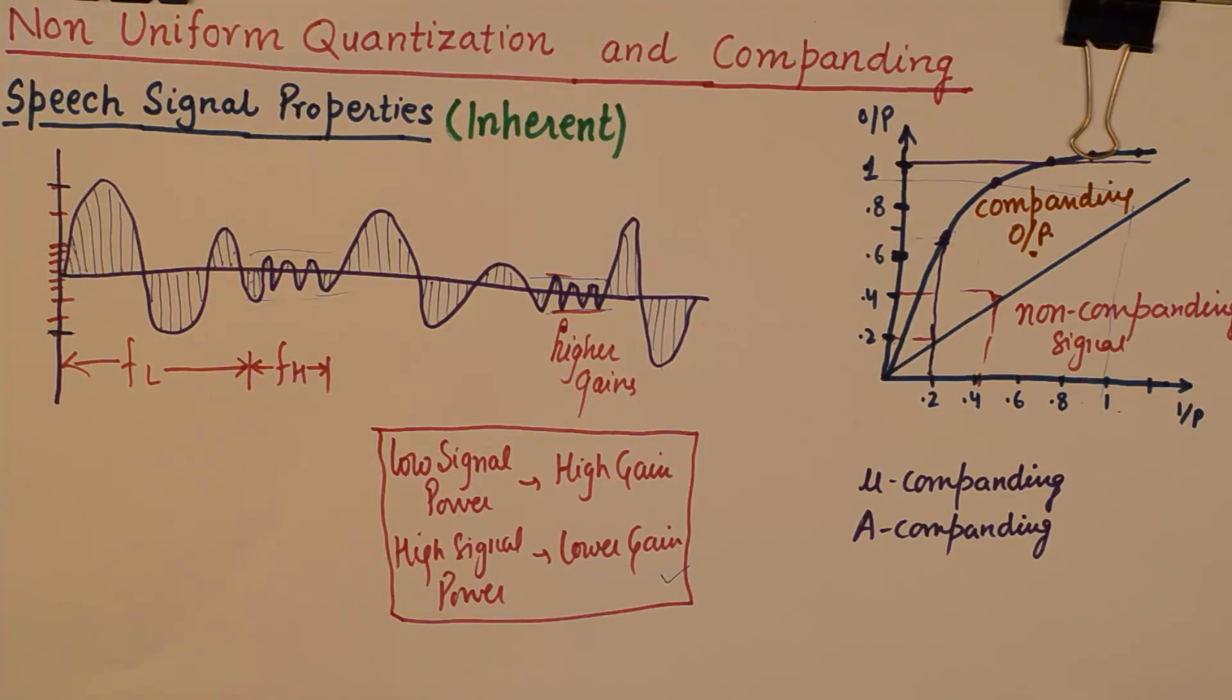And exactly the opposite happens at the receiver. Because compander stands for compression and expanding on the receiver side. So, exactly the opposite of that takes place at the receiver. And the signal that we get is a more uniform signal. And even the lower notes and the higher notes, they will all sound good at the receiver. That is what the beauty of companding is.